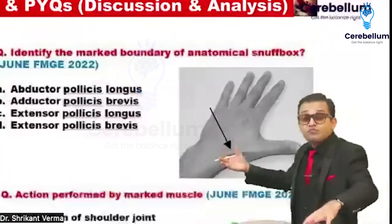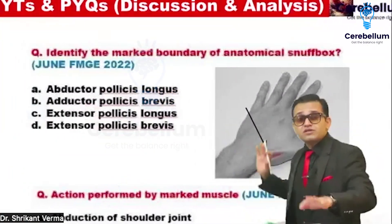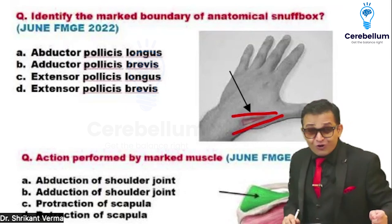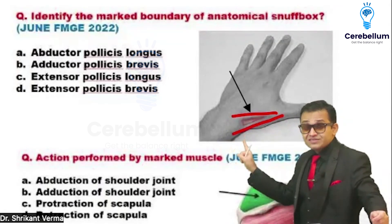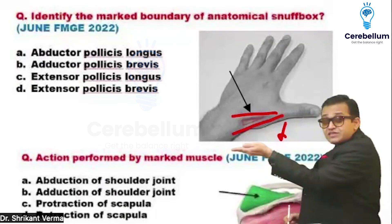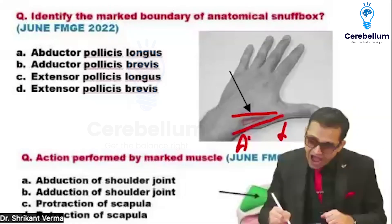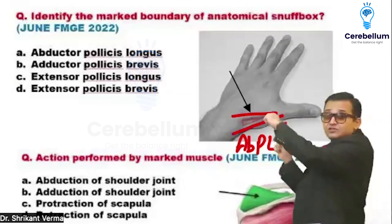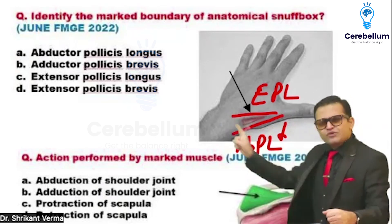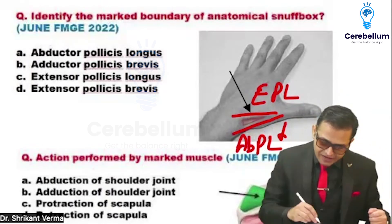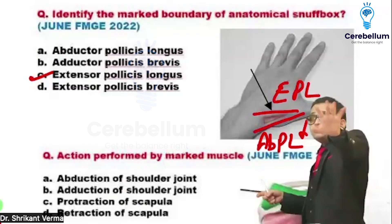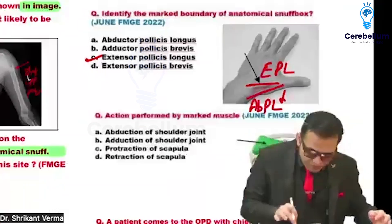In the anatomical snuff box, there is an anterior boundary and a posterior boundary. Anteriorly: abductor pollicis longus; posteriorly: extensor pollicis longus; and between them is extensor pollicis brevis. When the anterior muscle contracts, it causes abduction of the thumb — that is abductor pollicis longus. The posterior part causes extension — extensor pollicis longus. I will teach you five clinical points related to this.